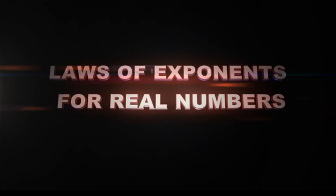Example 3: 5 raised to the power 5 divided by 5 raised to the power 2 equals 5 raised to the power 5 minus 2, which equals 5 raised to the power 3. Example 4: 2 raised to the power 3 multiplied by 3 raised to the power 3 equals 2 multiplied by 3, the whole raised to the power 3, which equals 6 raised to the power 3.